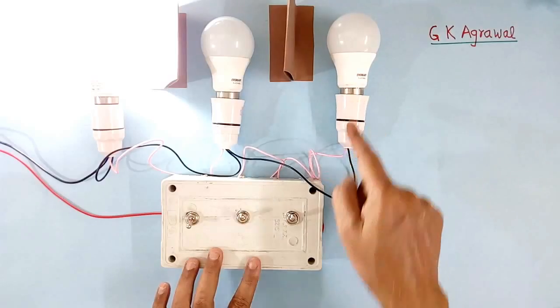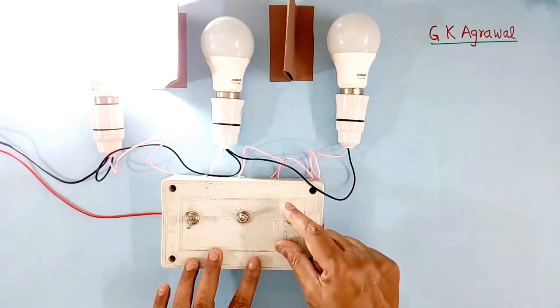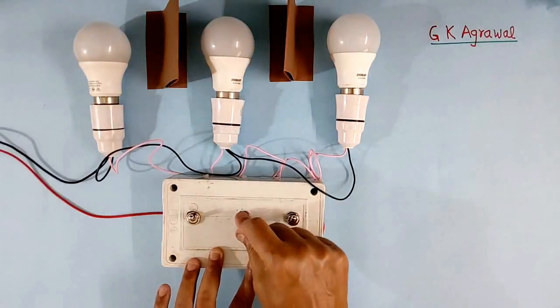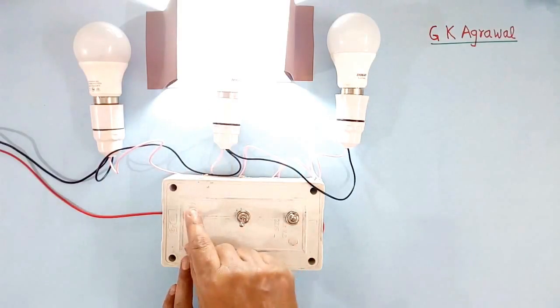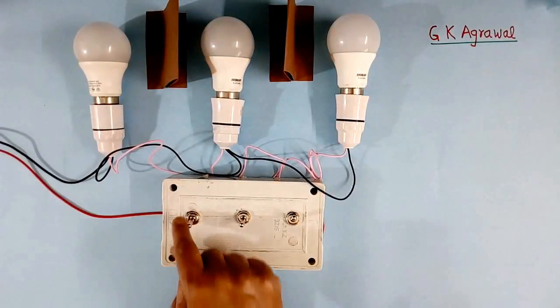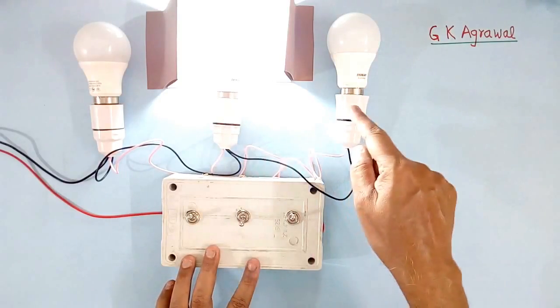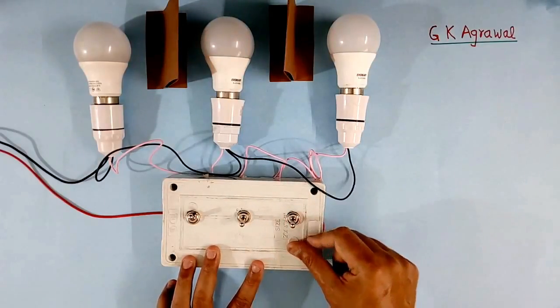Now I will try to switch on this. So this will not become on. This also will become off. Now suppose this is on, and I try to switch on this, so this also will become off. It will not become on, both will become off.